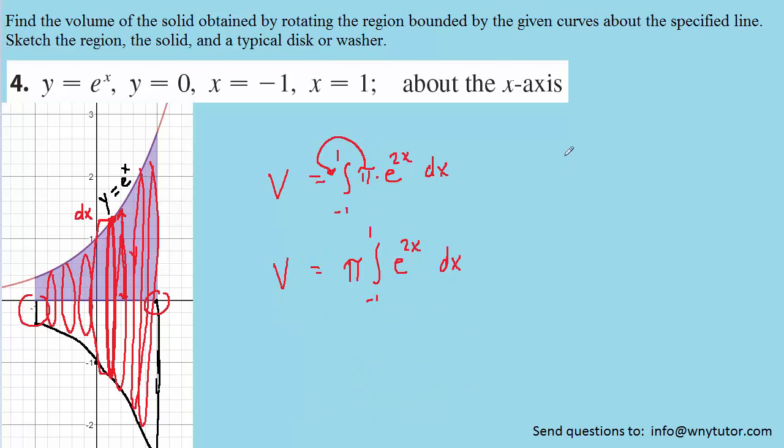Now, to do that, it's going to be helpful to review the rule for integrating e to the kx, where k would be any constant. It turns out that the integral of e to the kx is simply 1 over k times e to the kx. And that's a useful rule to review because that's going to help us integrate our current expression over here.